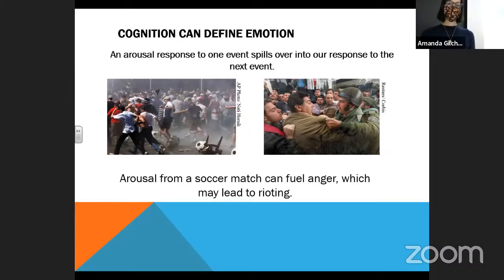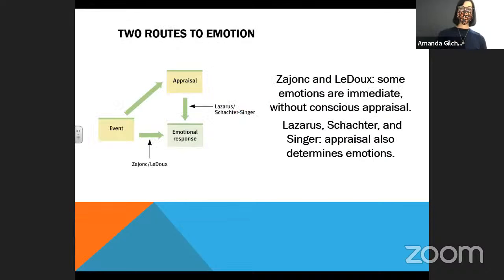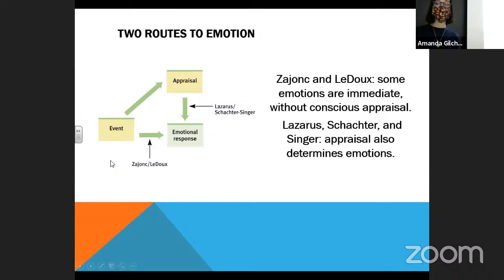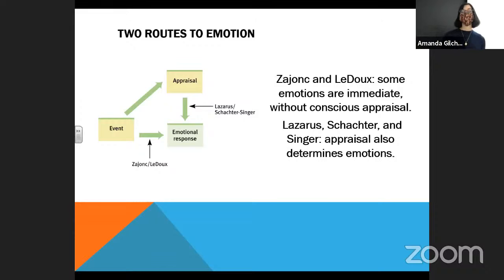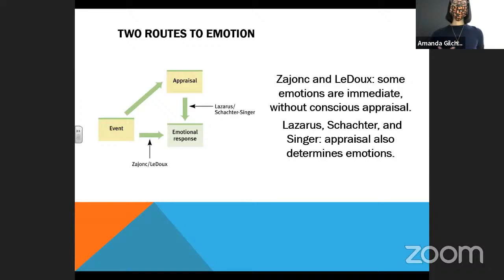So let's talk a little more about the relationship between emotion and thought. We're going to talk about two different routes to emotion. The first route comes from Zajonc and Joseph LeDoux. There are some emotional responses that you have that are immediate and you don't even have to think about them. By and large, that will be areas like the amygdala — areas in the limbic system in the brain — that are going to produce this immediate emotional response without having to think too hard about it.